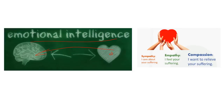Emotional intelligence is said to have three important skills. The first is emotional awareness — the ability to identify and name one's own emotion. For example, if you are happy, you identify that you are in a state of happiness; if you are sad, you identify that you are in grief. If you are too happy, you don't over-promise people; if you are too sad, you don't take hasty decisions.